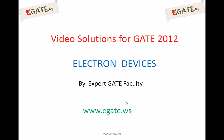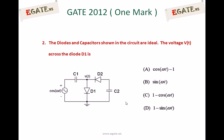This is a question from GATE 2012 ECE branch, topic: electron devices. The diodes and capacitors shown in the circuit are ideal. The voltage V(t) across diode D1 is: A. cos(ωt) − 1, B. sin(ωt), C. 1 − cos(ωt), D. 1 − sin(ωt).